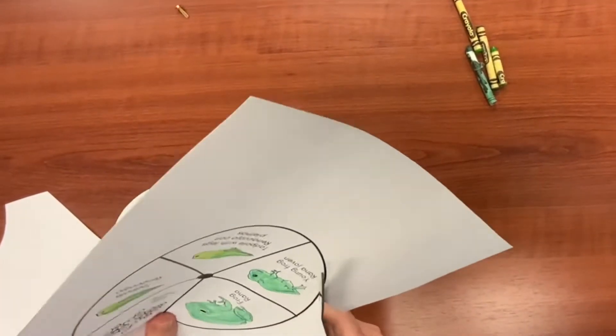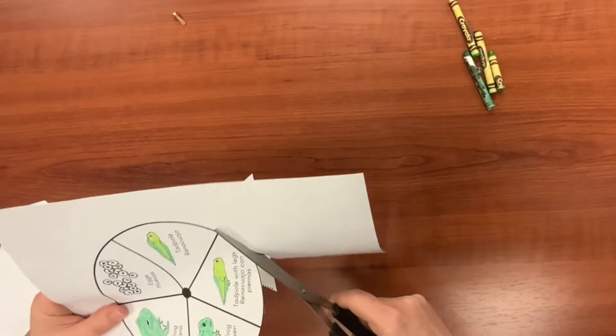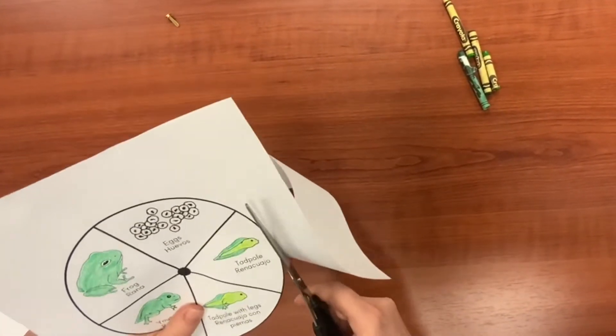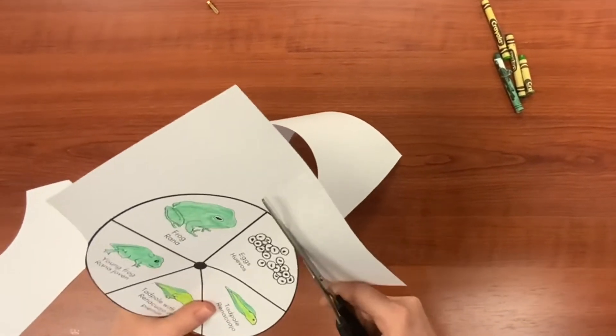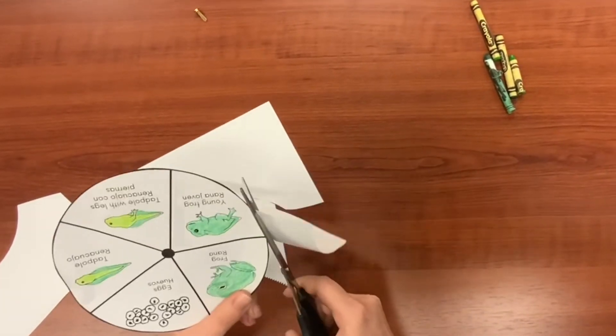And then on our second worksheet, the one with the different phases of the frog's life cycle, we're just going to cut out this circle following the outline here. There we go.